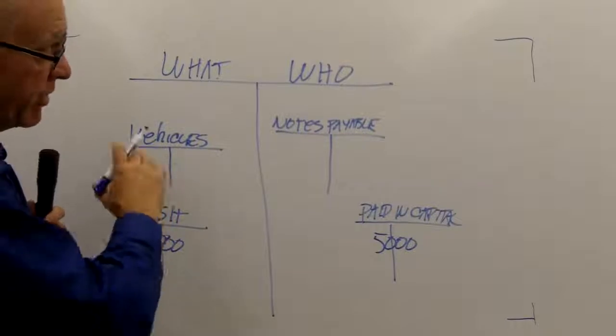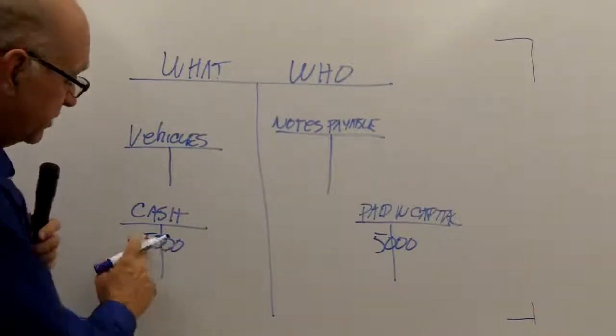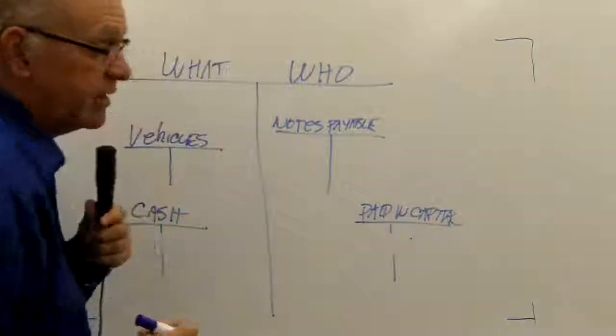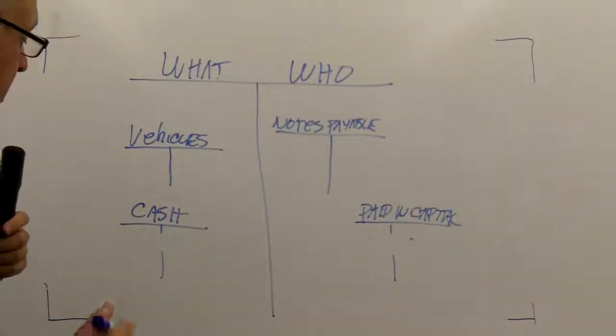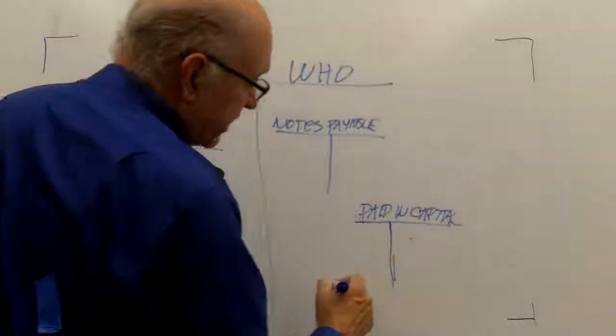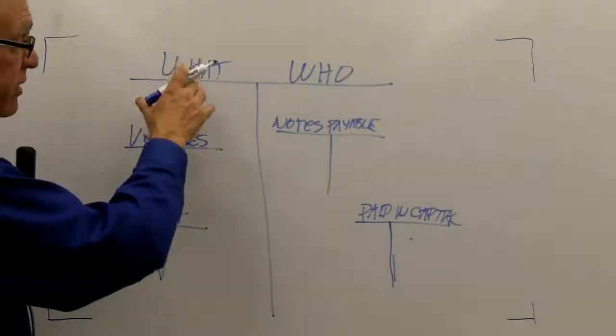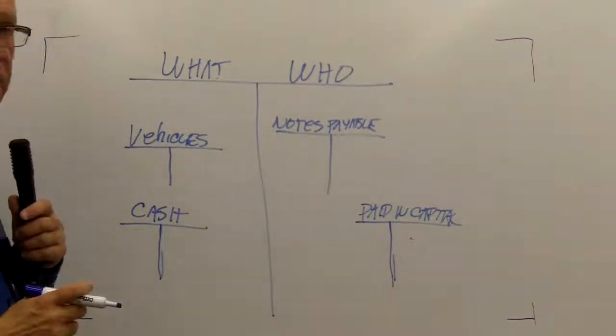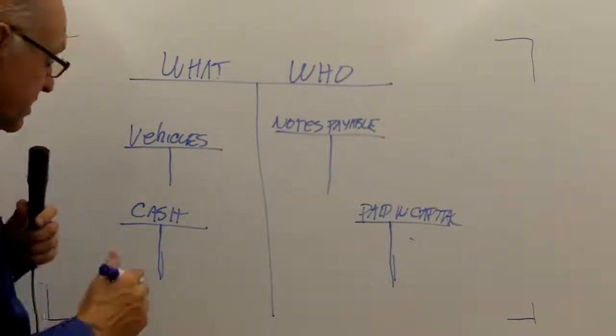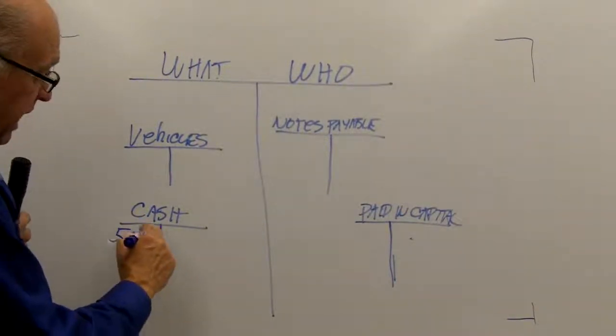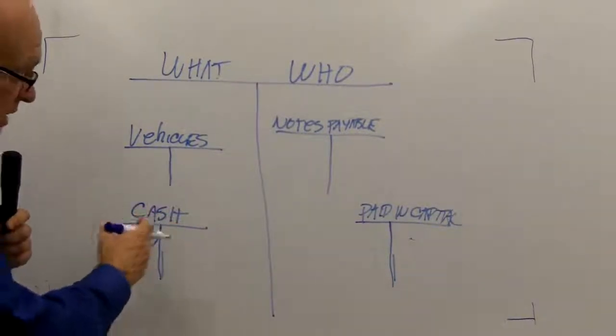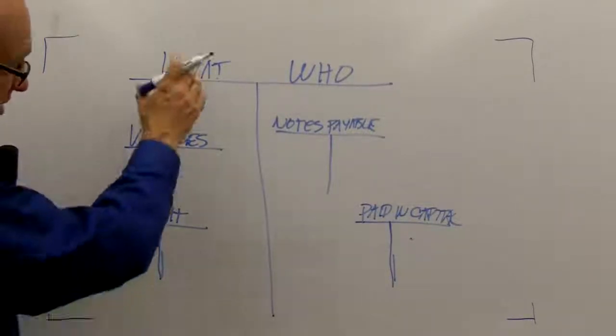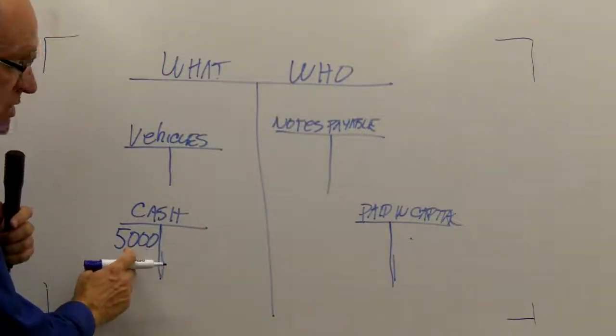But to maintain the balance of my what equals who, I actually increase these accounts based on the side that they are on my big T. So each account has a left-hand side and a right-hand side. And they correspond to whether they increase because they're on the what side or how they increase if they are on the who side. Let's go back to my example. I put $5,000 into a checking account and begin my business. My cash increases by $5,000. I do that on the left side of the T. Because in my account, assets, because they're on the left-hand side of the big T, increase on the left-hand side.